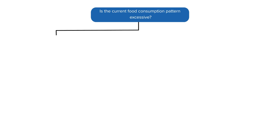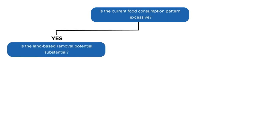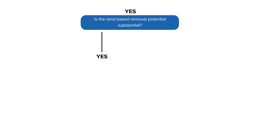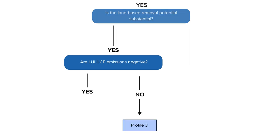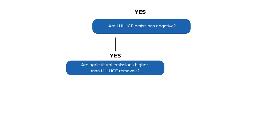Let's go back to the first question. Is the current food consumption pattern excessive? Yes. Is the land-based removal potential substantial? If it is not substantial, then the country is in profile 4. If it is, that gives us another question: are the land use, land use change, and forestry emissions negative? No means the country is in profile 3. Yes — then ask our final question: are agricultural emissions higher than land use, land use change, and forestry removals? If no, the country is in profile 2, and if yes, the country is in profile 1.